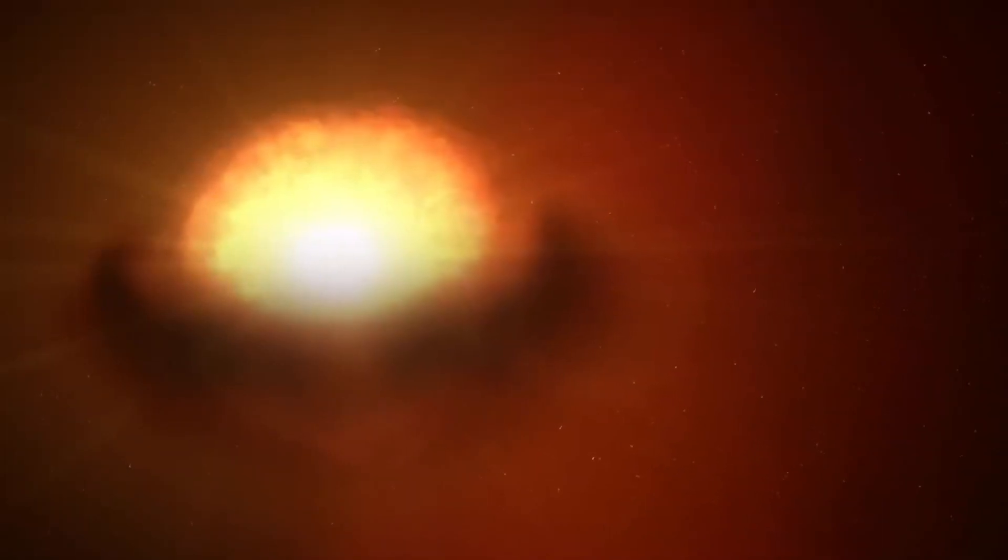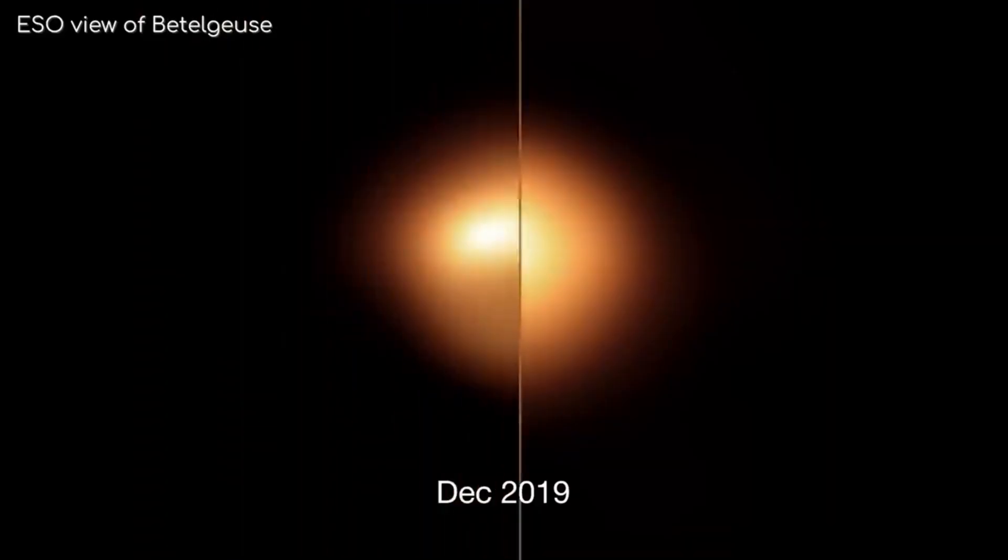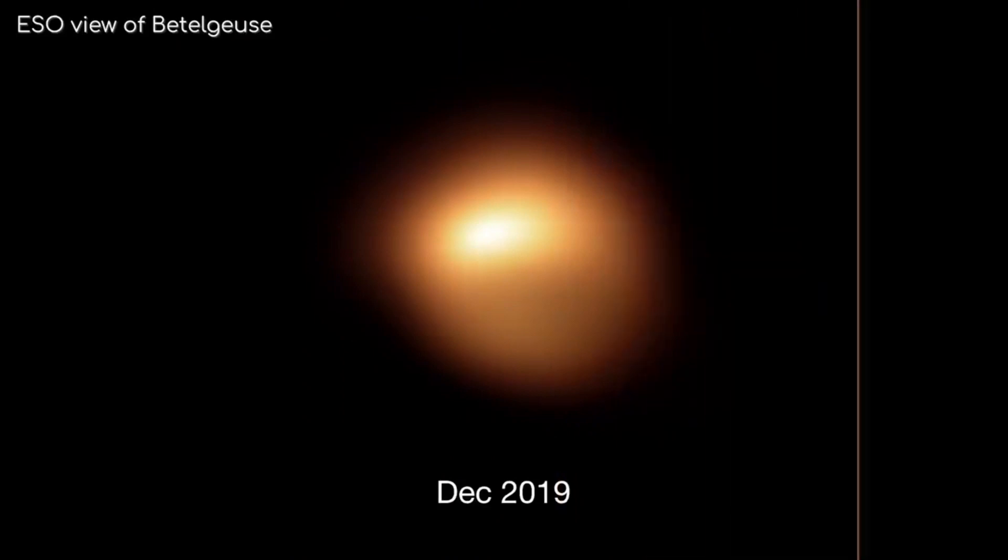Numerous theories emerged to explain Betelgeuse's dimming, but one hypothesis stood out and was subsequently confirmed by the Hubble Space Telescope. Based on Hubble's observations, scientists determined that the star had expelled a vast cloud of dust, partially obscuring its light from our perspective.